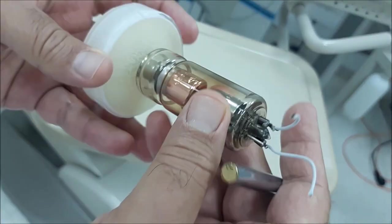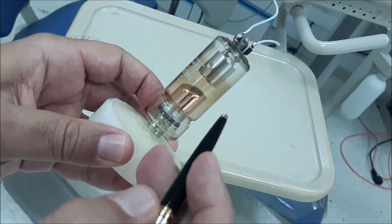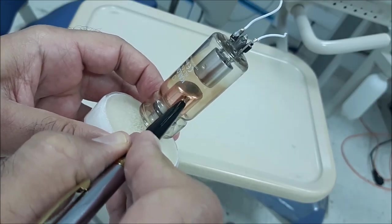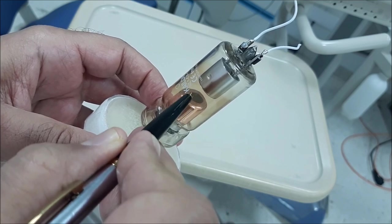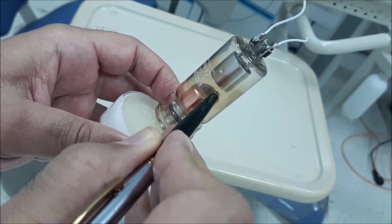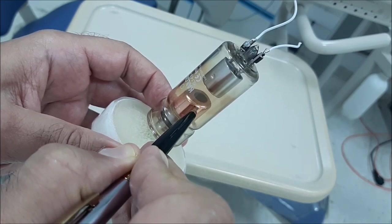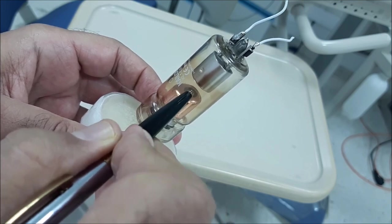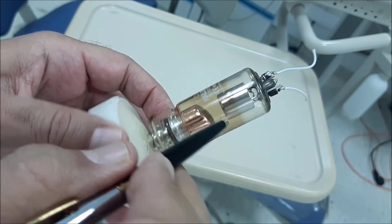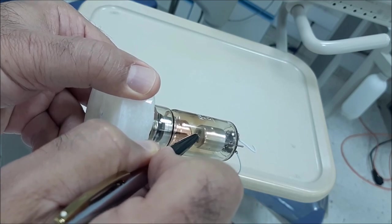If you see that in the anode there is a rounded area which we call the target. It differs in color from the surrounding copper. This is the target. It is also made from tungsten, the same material from which the tungsten filament is made.